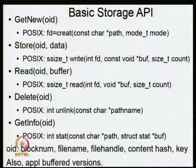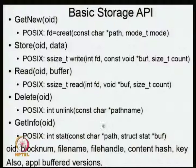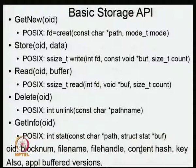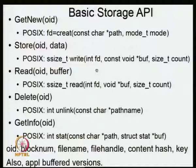The object ID can be different things. A block number means it has no user-visible name, just a number. A file name has a user-visible name. A file handle is used in certain storage systems where you pass a descriptor directly. In some systems you have a content hash — you retrieve an object by giving a hash of some parts of the file. A key can also be used. This basic API manifests differently in different contexts; for example, applications concerned about performance might write their own buffered versions.